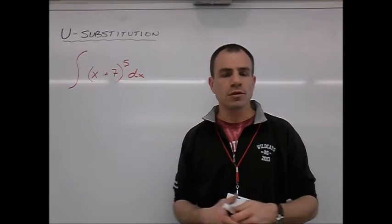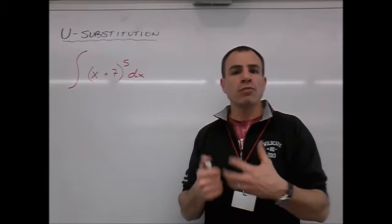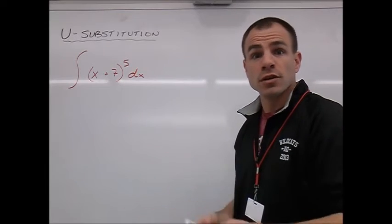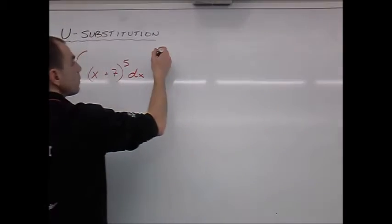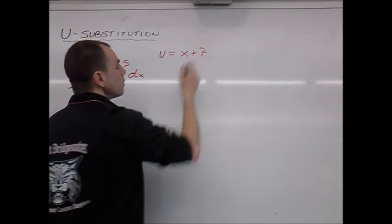So this is where u-substitution comes in. We have something ugly to the fifth power. So let's represent that. Ugly begins with the letter u. Let's use u. We're going to do off on the side, u is going to be our ugly item. u is x plus 7.